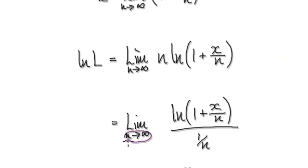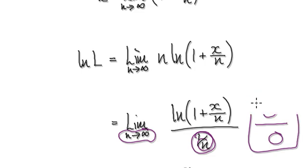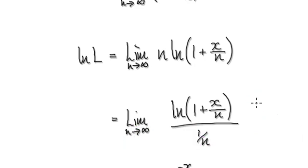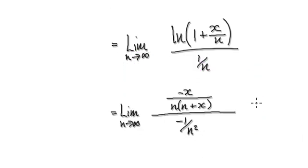Now check it again. As n tends towards infinity, this expression inside will be one, so natural log of one is zero. So the numerator is zero. As n tends towards infinity, 1/n is also going to be zero. So you've got zero over zero, which is an indeterminate form.